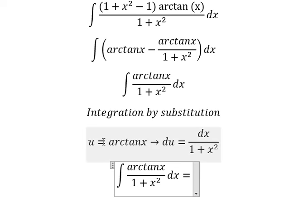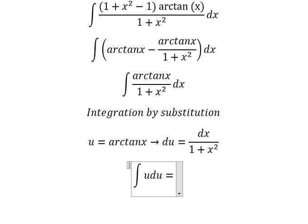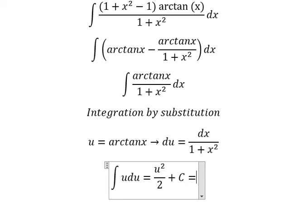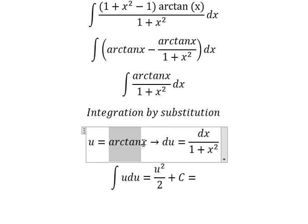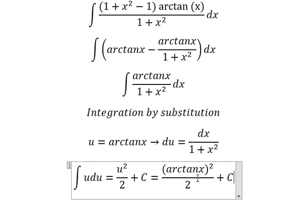So arctan(x) will be replaced by u, and dx over one plus x squared will be replaced by du. The integration of u gives us u squared over 2, and we add the constant c. Substituting back, u is arctan(x), so this is the final answer.